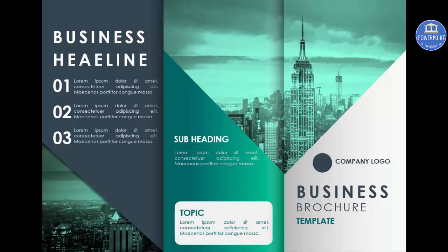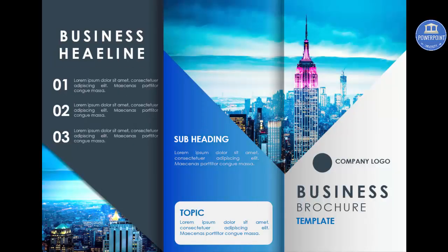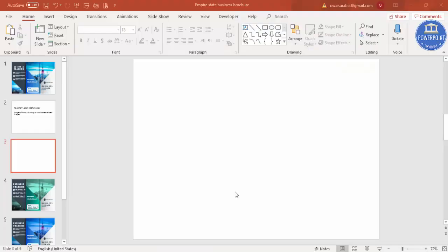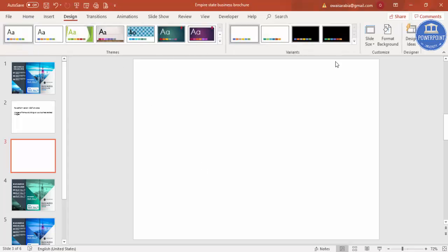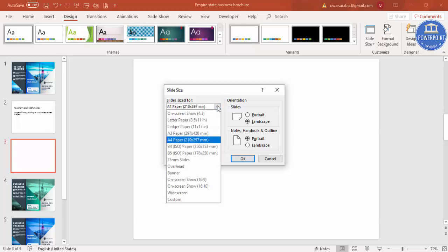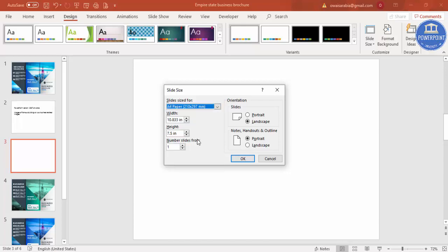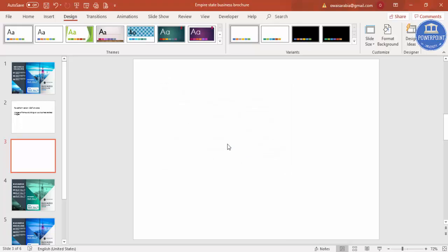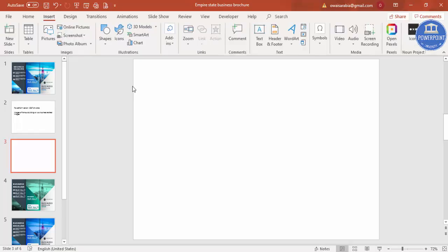Let's see how to do this in PowerPoint. Add a new slide and change the slide size. Go to Design, Slide Size, and select Custom Slide Size. Click the drop-down list, select A4, and keep it in landscape orientation, then click OK. You now have an A4 size slide. Then go to Insert.